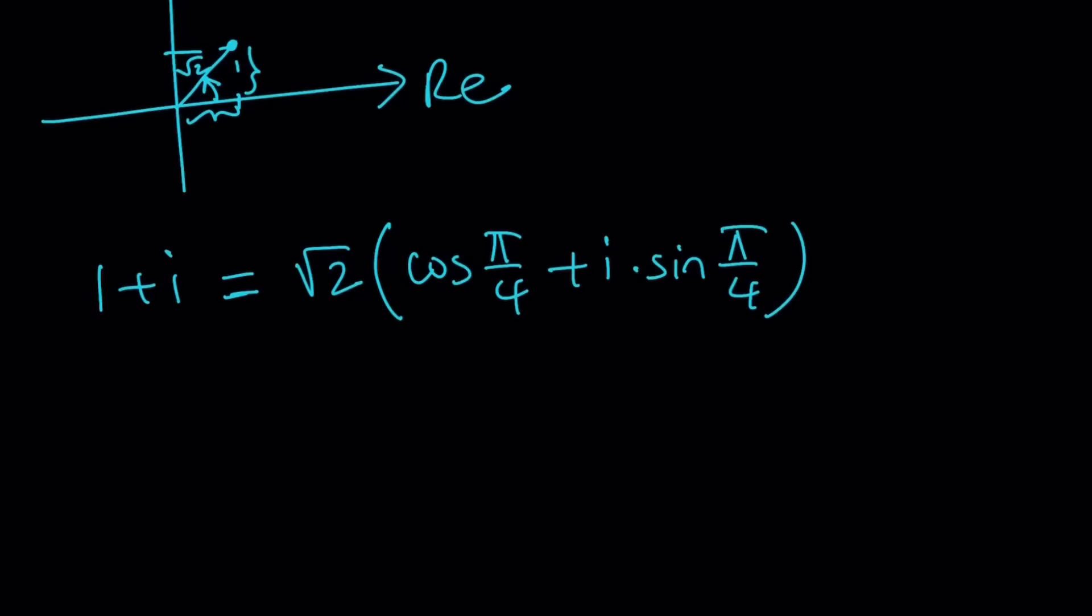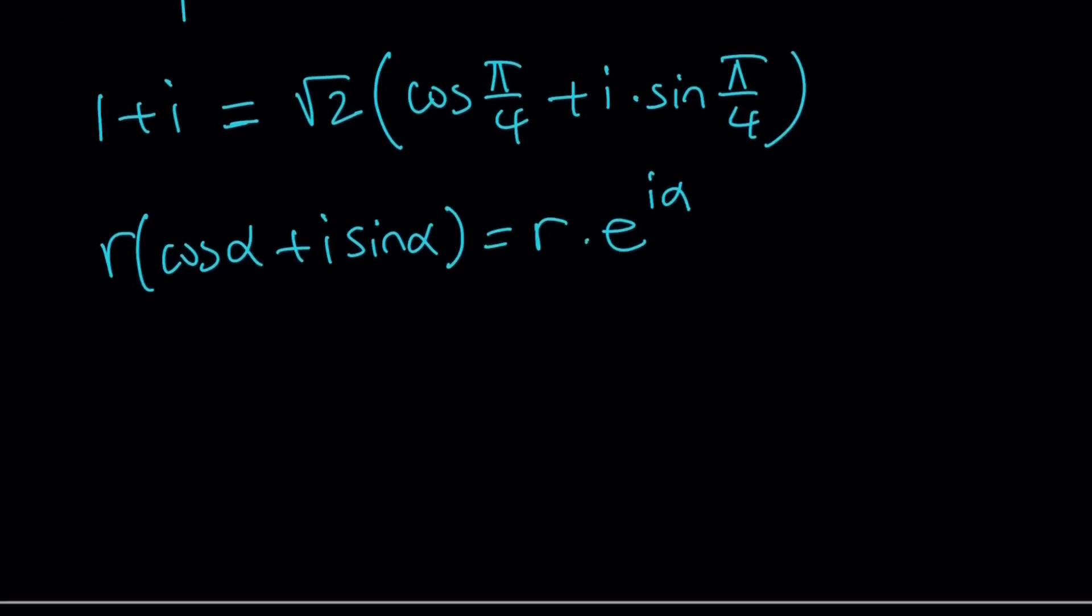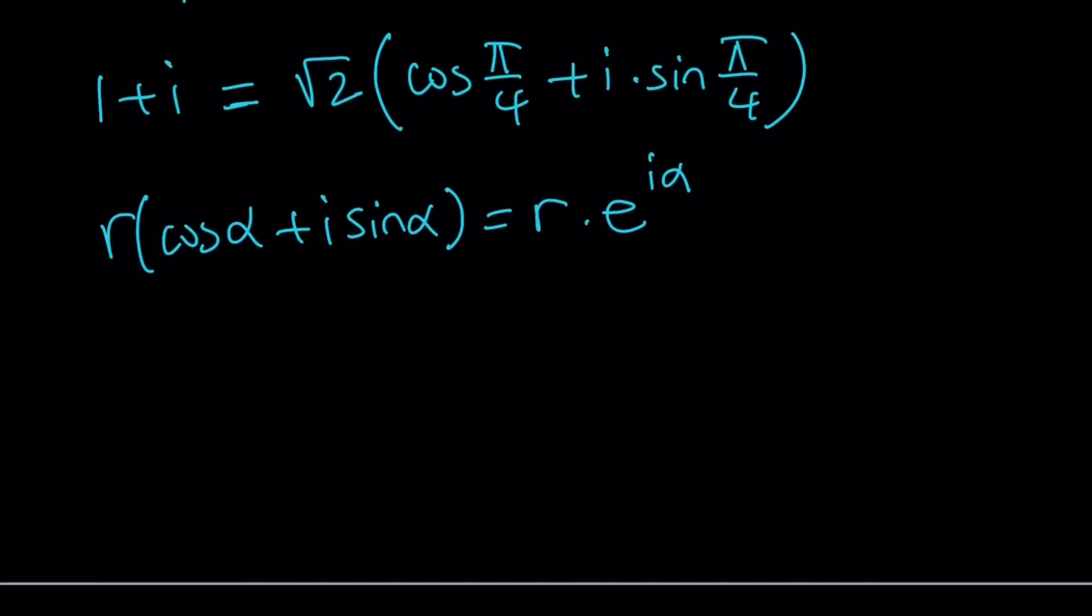This can be written in a more concise form thanks to Euler. We can write any complex number like r times cosine alpha plus i sine alpha as r times e to the power i alpha. We have this beautiful relationship between a complex exponential and this complex number. Any complex number can be written as e to the power i alpha if you ignore the modulus. This is a really nice compact form.